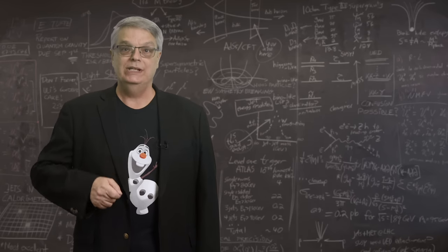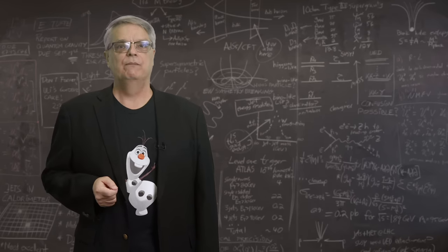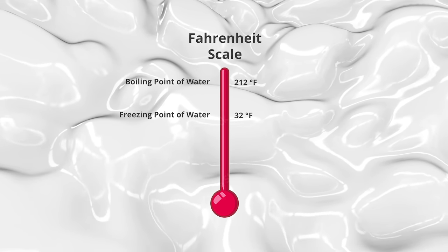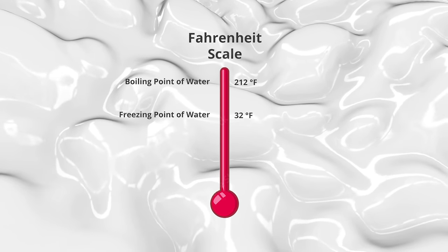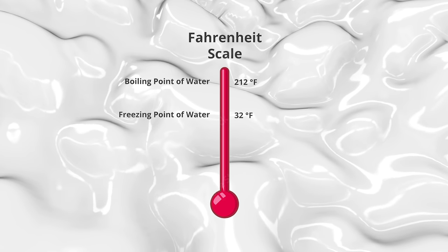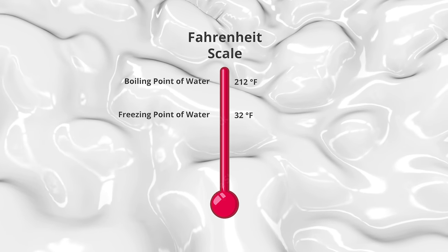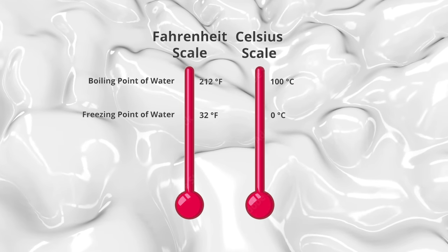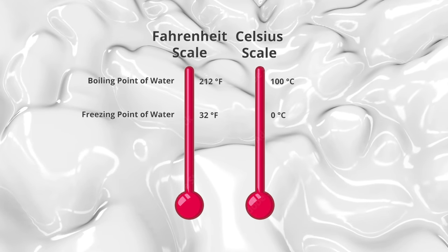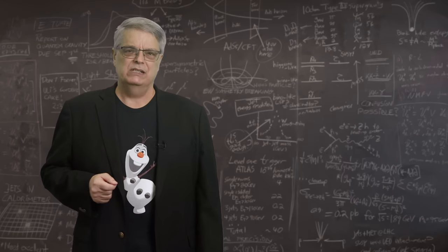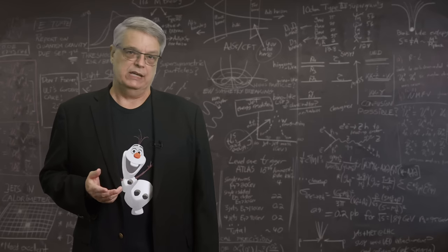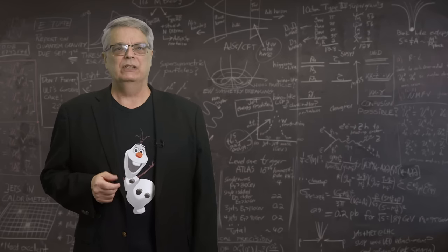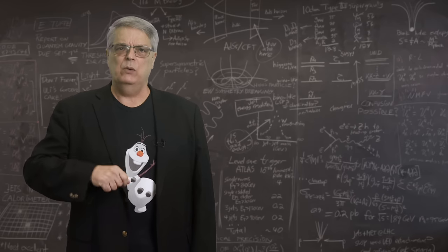If we're going to talk about cold, we need to talk about temperature scales. Americans are familiar with the Fahrenheit scale, which sets the freezing and boiling points of water to be 32 and 212 degrees, respectively. Most of the rest of the world uses the Celsius or centigrade scale and sets those points at zero and 100 degrees. Because there is nothing unique about water as a chemical beyond being familiar, there is really nothing special about either way to report temperatures.